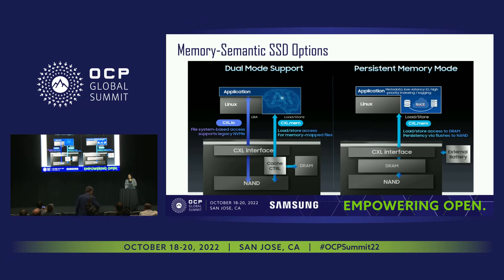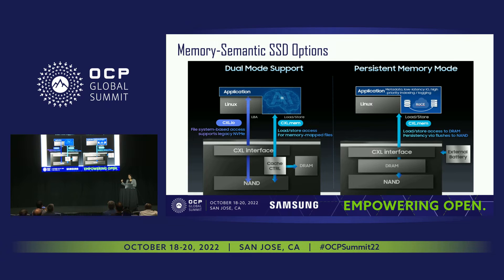We provide two options. The first is the dual mode option: NAND uses NVMe through the I/O protocol with file system-based access — that's the legacy path. There is a cache controller and DRAM on top of that, used for load/store memory-mapped file access. The second option addresses write-heavy metadata workloads looking for persistent memory support — such as low-latency I/O, logging, or indexing.